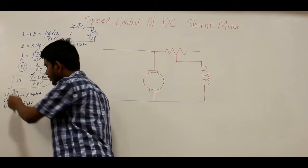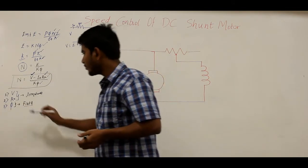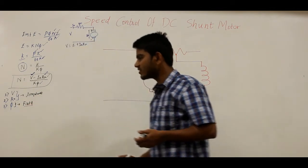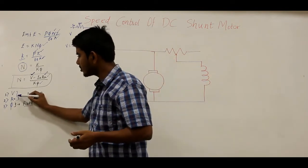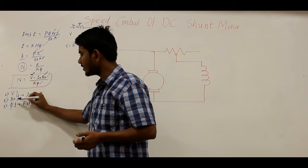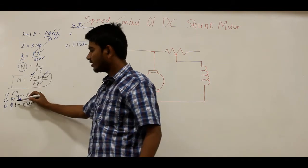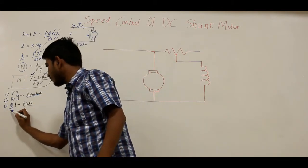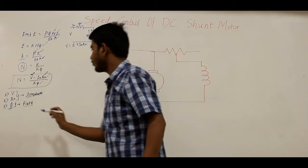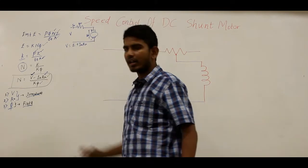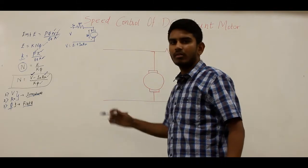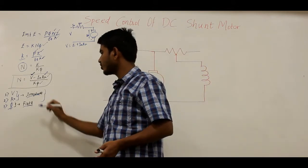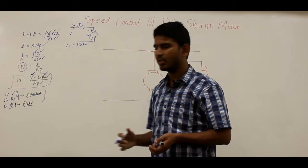By looking at the right-hand side of this equation — (V − IA·RA) / KΦ — we can see that by changing the armature terminal voltage, the external resistance, or the flux per pole, we can change the speed. The first two affect the armature circuit; changing flux affects the field circuit. Therefore we distinguish armature control methods and field control methods, applicable to DC series, shunt, or compound motors.